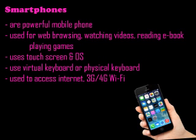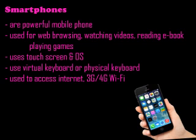The last mobile device is the smartphone. All of you know about smartphones. They are used for web browsing, watching videos, reading e-books, and playing games. Smartphones use a touchscreen and operating system like other tablet computers. They have a virtual keyboard, and some smartphones have a physical keyboard — just like an ordinary laptop or desktop keyboard. Smartphones are also used to access the internet using 4G and 3G data plans, and they use Wi-Fi to connect to the internet.